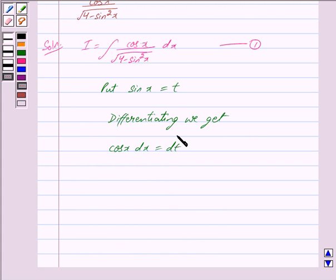Putting these values in 1 we get, therefore i is equal to integral. Now cos x dx is equal to dt.